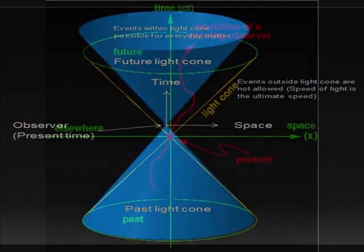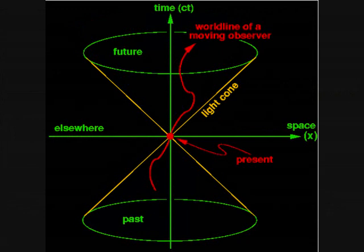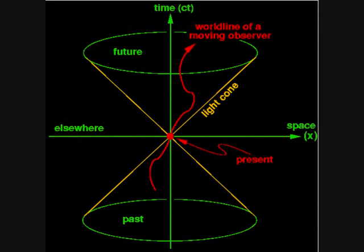Space and time are at right angles to each other, with time being in the vertical axis rising up through the light cone and space being represented by the horizontal plane.